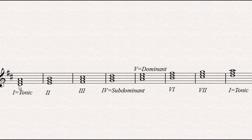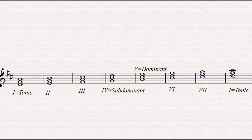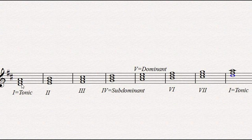I just put sharps on F and C in the key signature, and now all the Fs are sharp already. If we play them through, it sounds like: major, minor, minor, major, major, minor, diminished, and major again. We can do this with every single key — we just adjust the notes and especially the distances between the notes that form the triads, making sure they are consistent in every single key.